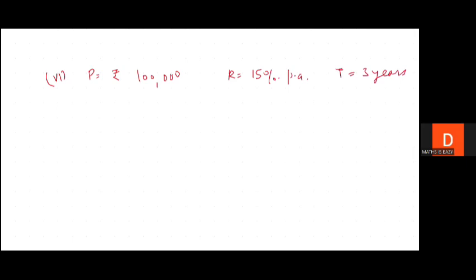So amount would be equal to P × (1 + R/100)^n. So amount equals rupees 1 lakh × (1 + 15/100)³. Amount equals rupees 1 lakh × (115/100)³.